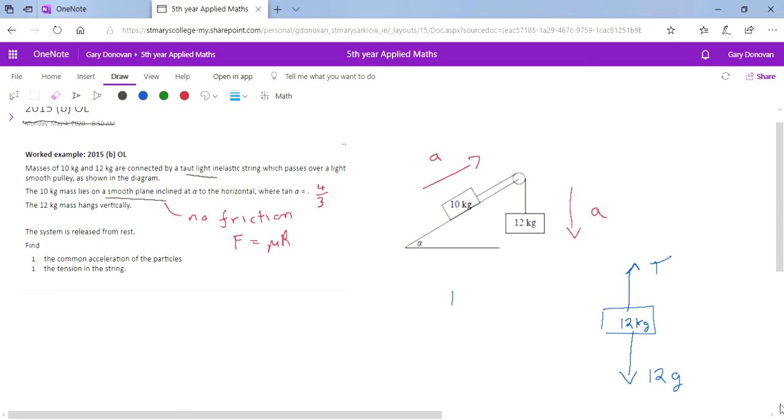For that particle, when we do our F equals ma equation, assuming we think it's going to move down, we assume that the 12g force is bigger than the t force. So the resultant force would be 12g minus t, and that's equal to its mass, 12, times a. So there's equation one.